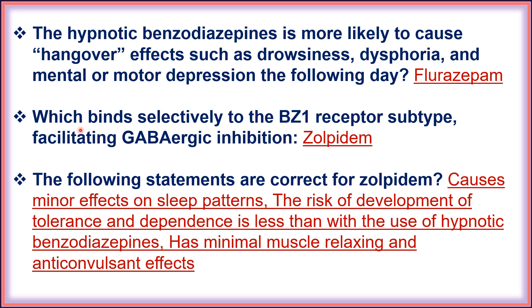Zolpidem binds selectively to the benzodiazepine-1 receptor subtype, facilitating GABA-ergic inhibition. The following statements are correct for zolpidem: zolpidem causes minor effects on sleep pattern; the risk of development of tolerance and dependence is less than with hypnotic benzodiazepines; and zolpidem has minimal muscle relaxant and anticonvulsant effects.